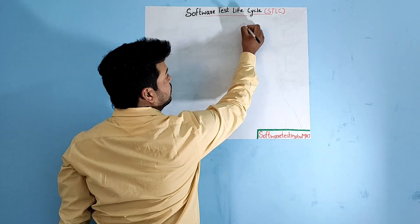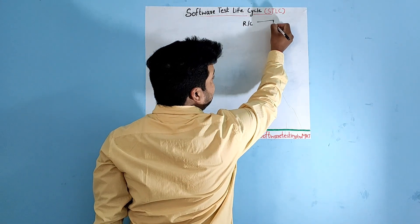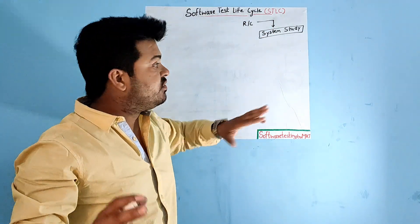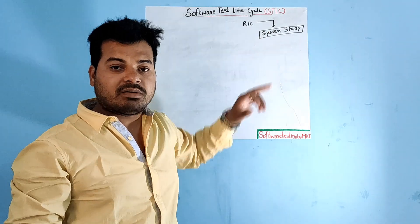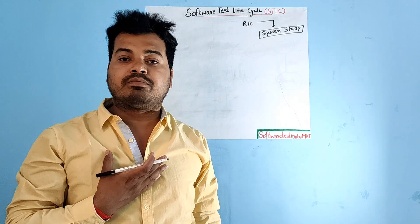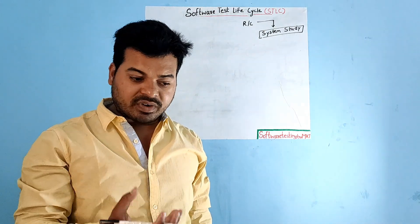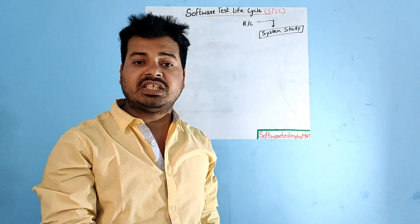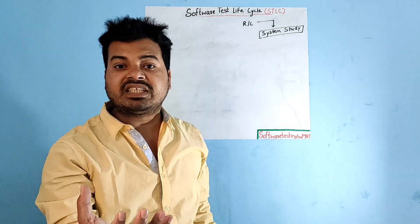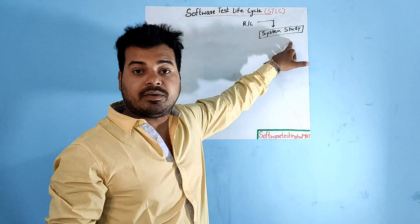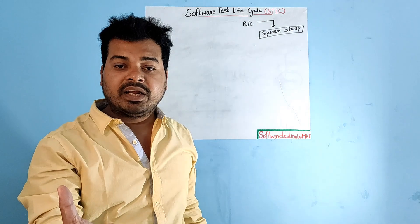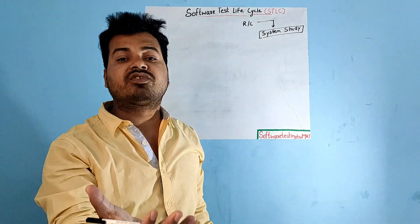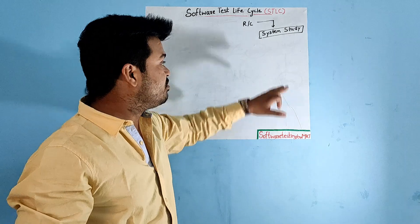The first stage of the Software Test Lifecycle is requirement collection and system study. System study is when the customer gives the requirement, the product manager collects it and explains it to the technical team — both developers and test engineers — making them thoroughly understand the requirement. That is called system study.